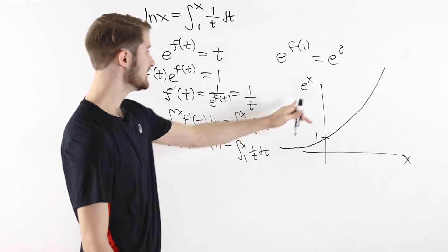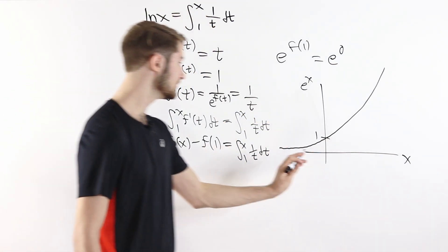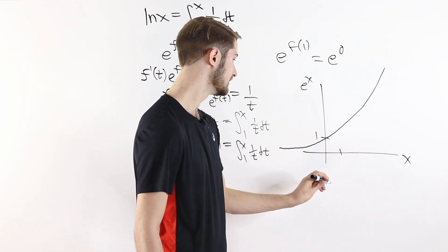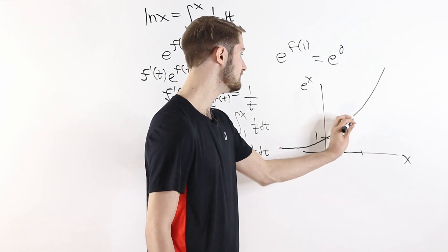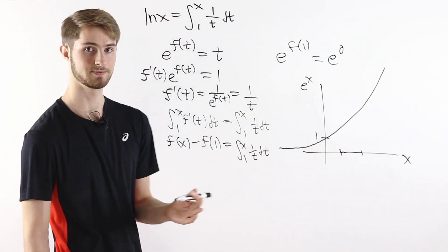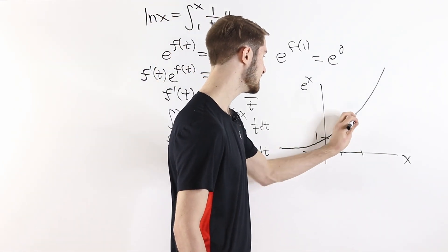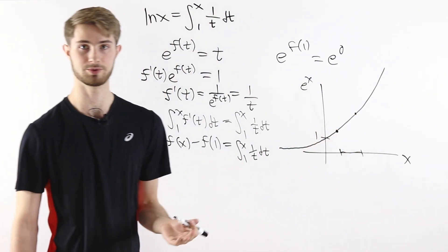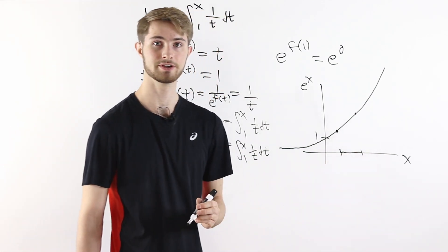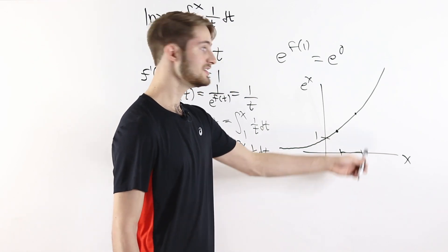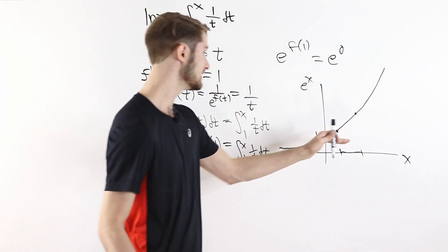The key fact here is that e to the x is an increasing function. So if we start with some value and go to a bigger value of the input, then we're going to get a bigger value of the output. What that means is it's not possible to have two different inputs with the same output, because if the two inputs are different, one is going to be bigger, and that means that output is also going to be bigger, so it can't equal the other output.